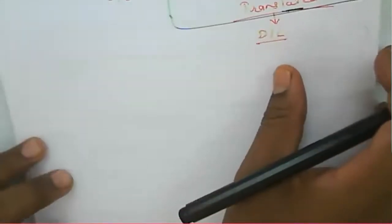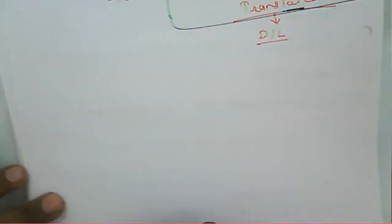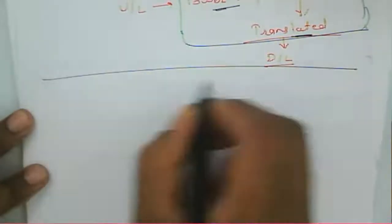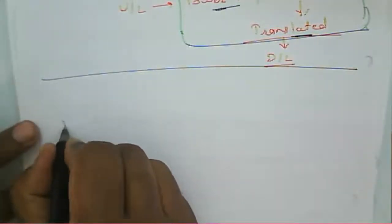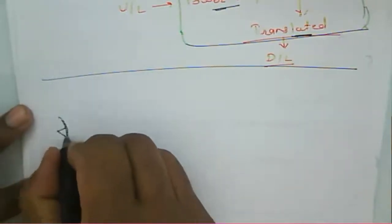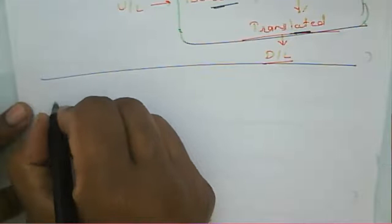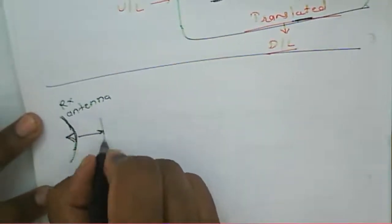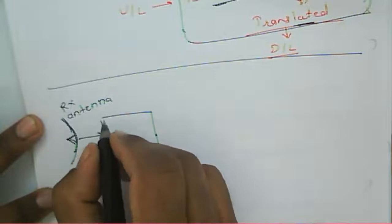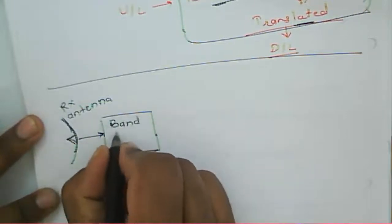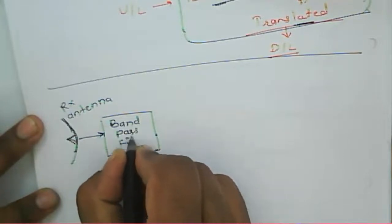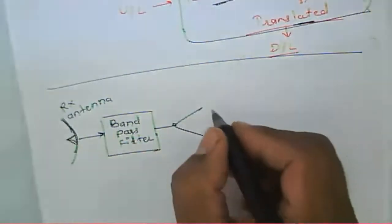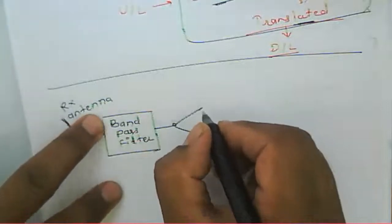Now let's draw a diagram to illustrate the bent pipe transponder. We consider a receiving antenna, followed by a bandpass filter, and a switching unit.